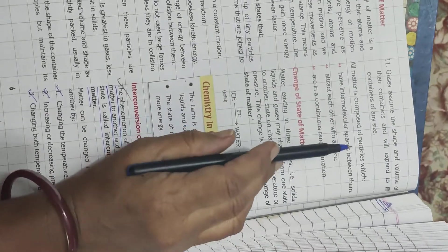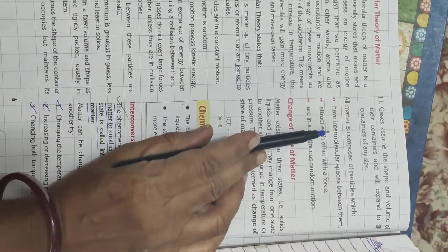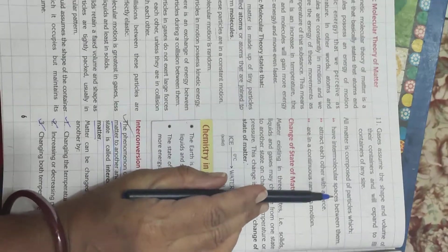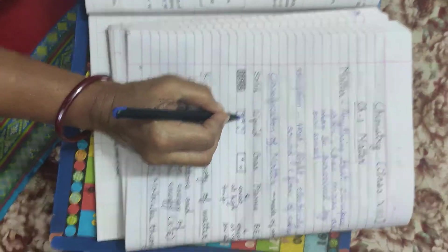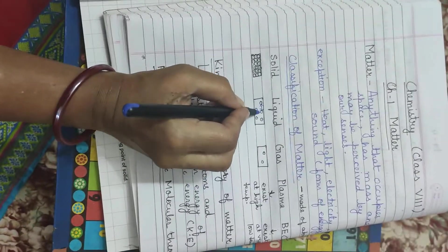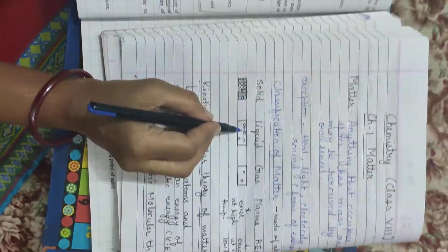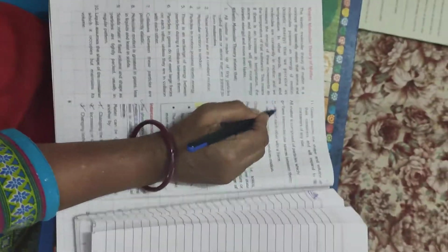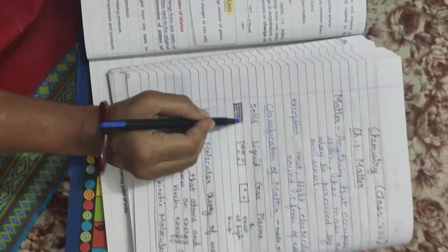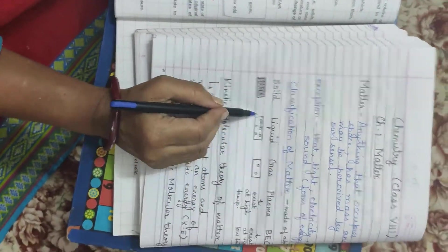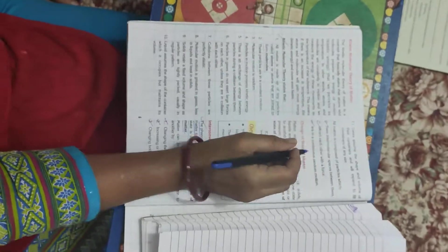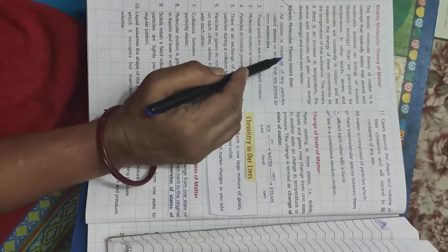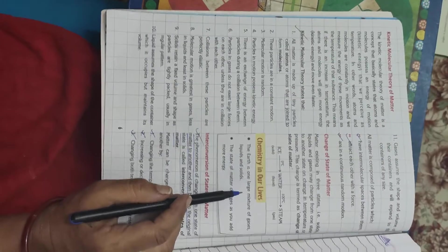So, ultimately, we come to the conclusion that matter have intermolecular space. What is intermolecular space? Space between two atoms is called intermolecular space. They have force of attraction between each other and they are in continuous random motion. So, these are the main three points or you can say the three main postulates of kinetic theory.